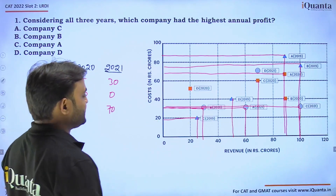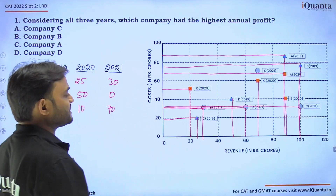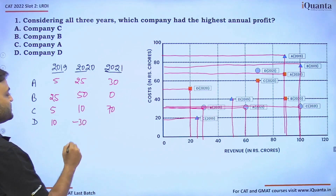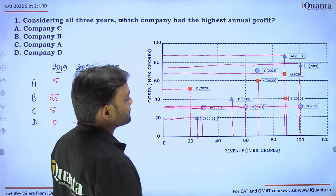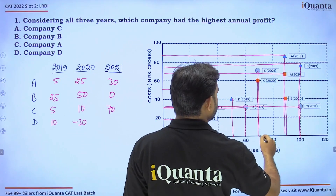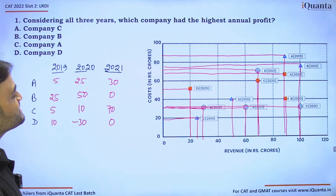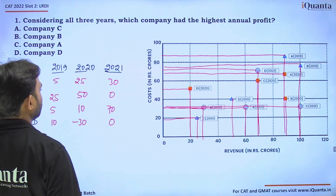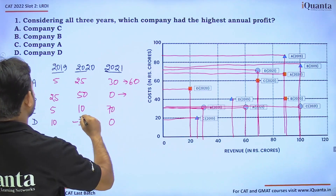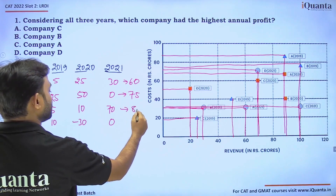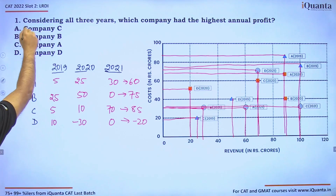For D in 2020, revenue is 20 and cost is 50, so minus 30 crores — D is already the least. For D in 2021, both values are 70, giving zero. Summing the total profits: A has 60, B has 75, C has 85, and D has minus 20. So the highest annual profit is for company C.